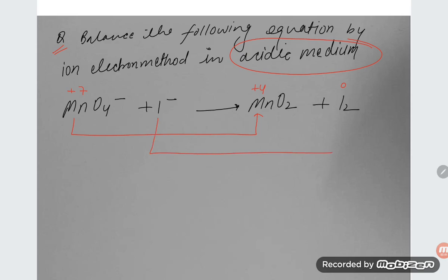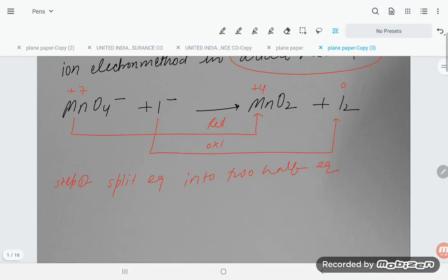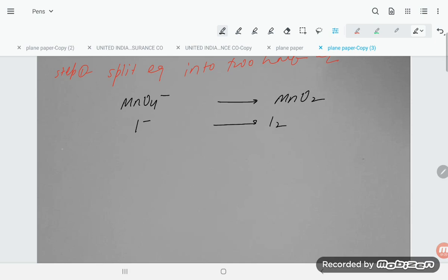Using the ion-electron method, that is the half-reaction method: +7 to +4 is reduction, and -1 to 0 is oxidation. Step 1: split the equation into two half-equations — one oxidation, one reduction. MnO4⁻ converts to MnO2, and I⁻ converts to I2.